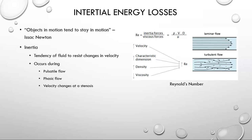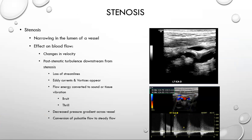A stenosis is the narrowing of the lumen of a vessel. It affects blood flow by changing velocity due to Bernoulli's principle, which causes an increase in velocity if there's enough narrowing. Past a stenosis, we often see post-stenotic turbulence if it is a critical stenosis. With post-stenotic turbulence, we see a loss of streamlines, eddy currents and vortices within blood flow, and flow energy gets converted into sound or tissue vibration. When this occurs, we call it a bruit or a thrill.